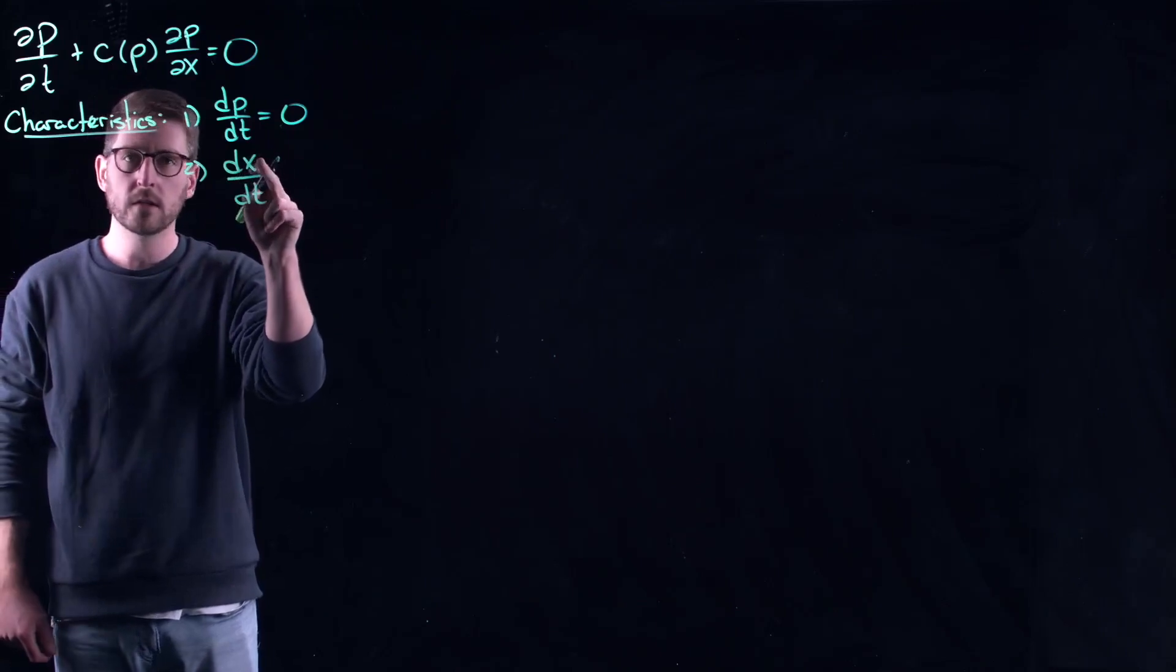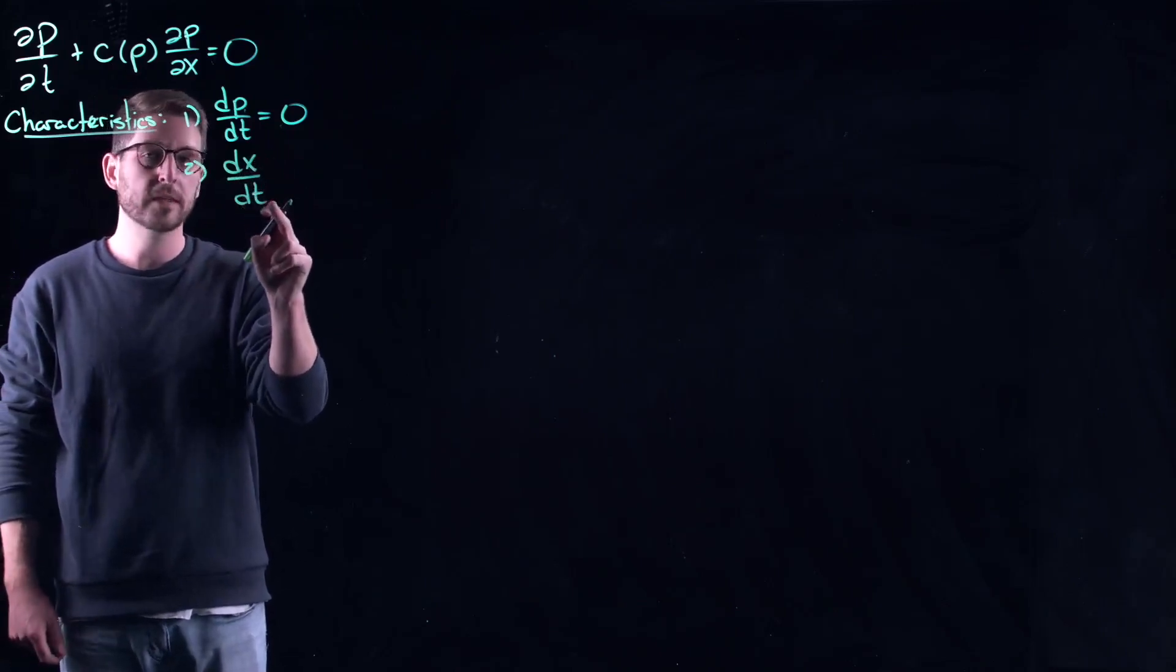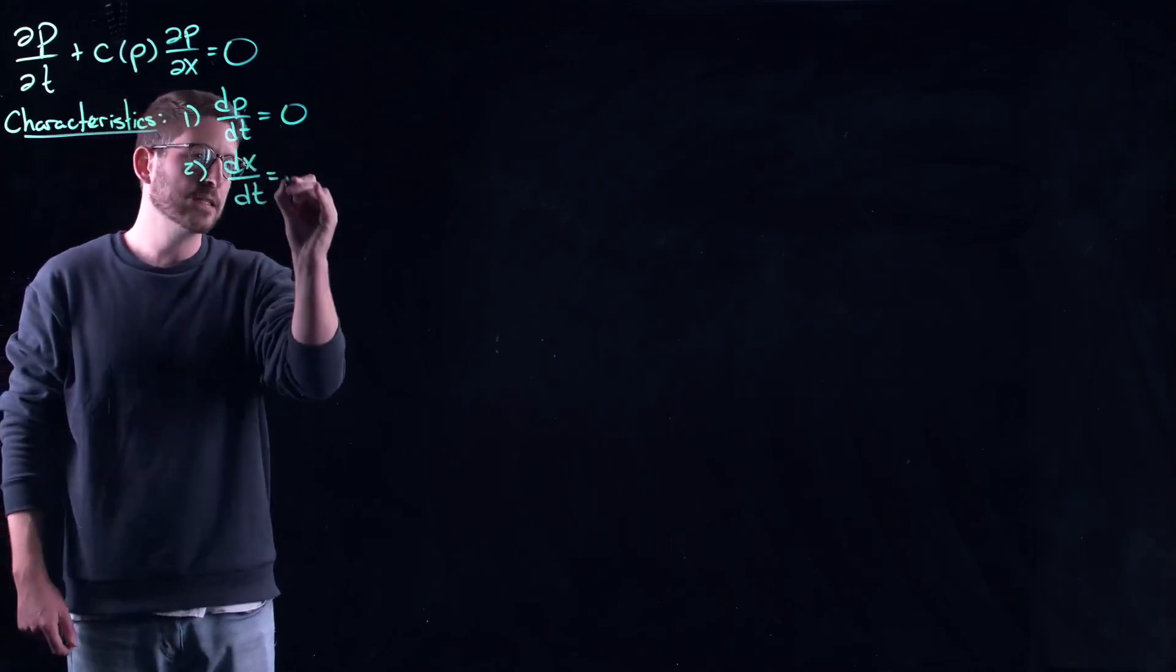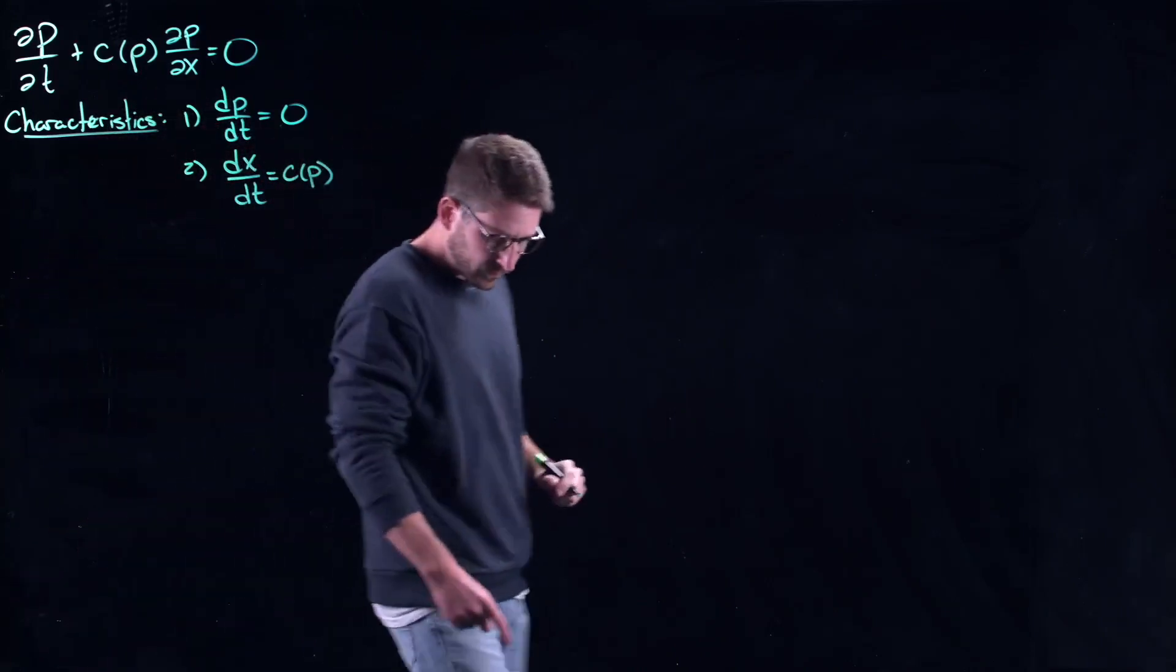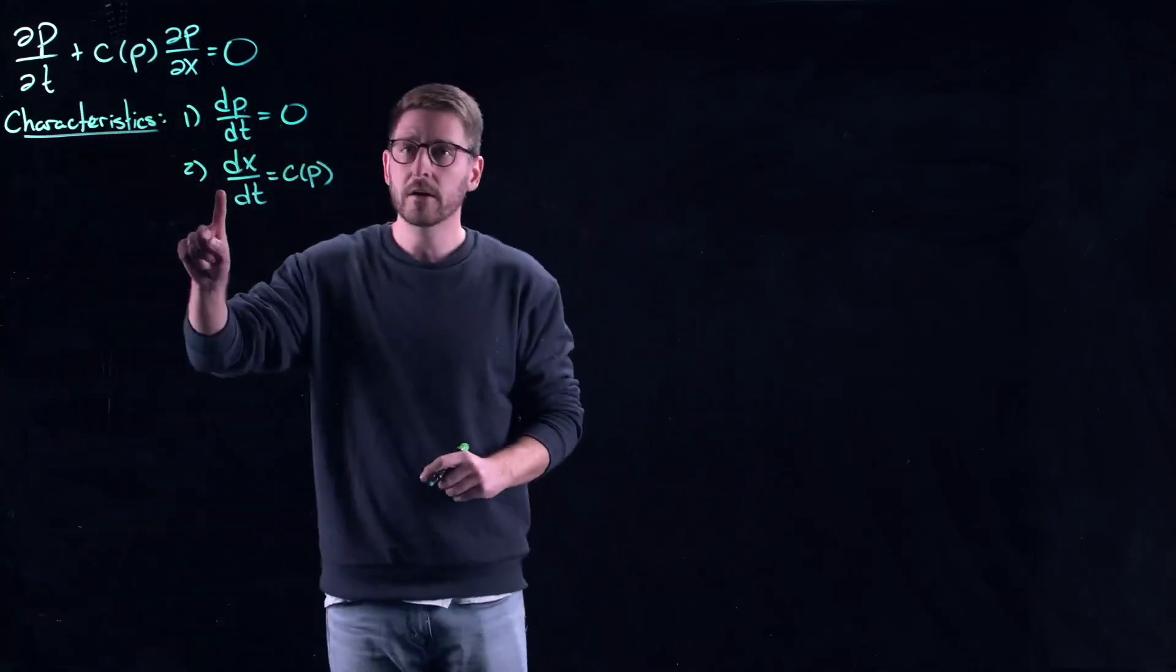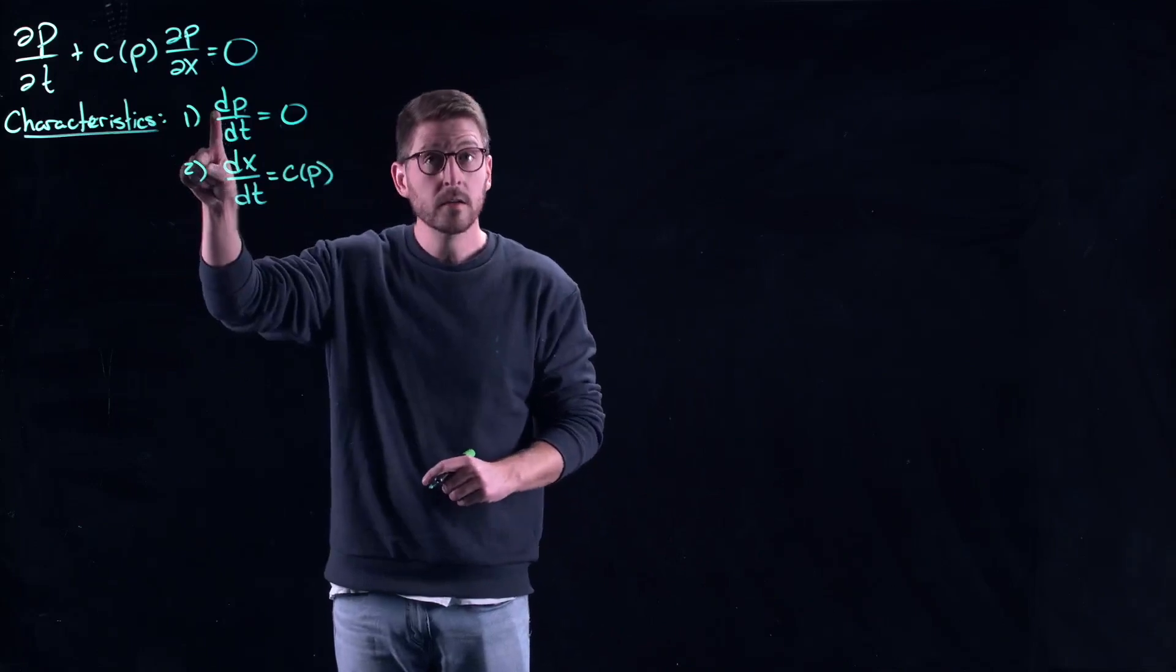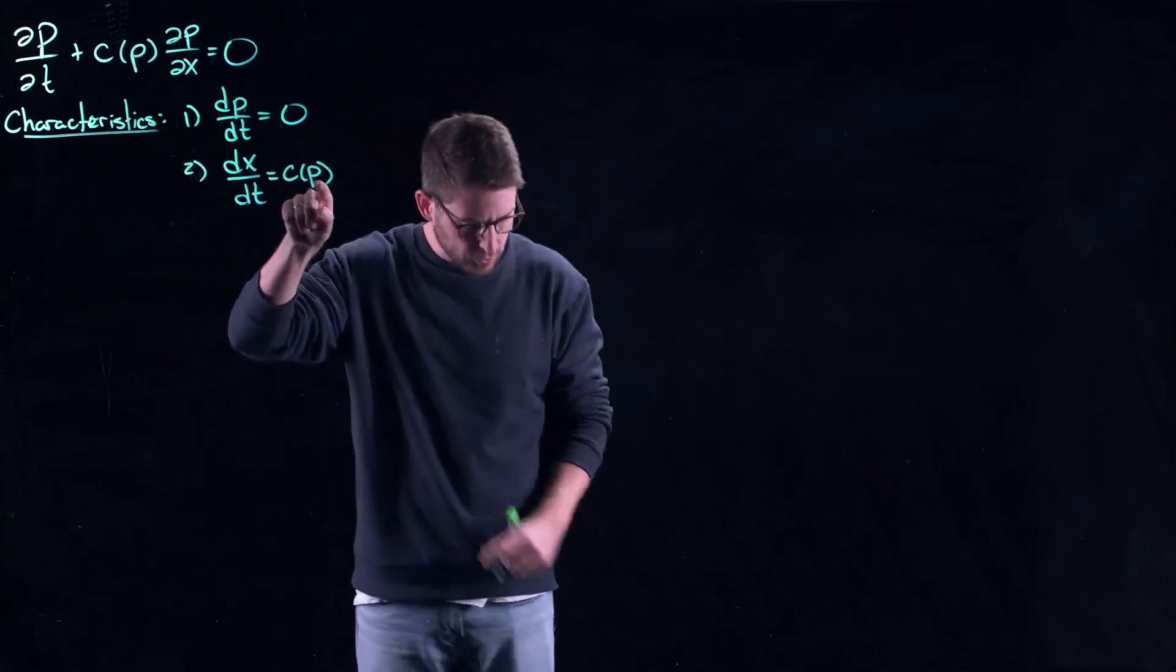If we follow a location in space according to some point in time, you're going to get c of ρ. So we can see here that our characteristics depend on the value of the solution ρ.